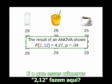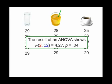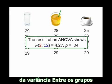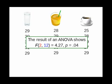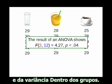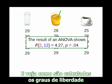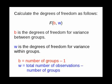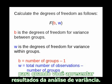What's that 2, 12 doing there? Those are the degrees of freedom for variance between groups and variance within groups. Here's how you calculate the degrees of freedom when you report results for analysis of variance.